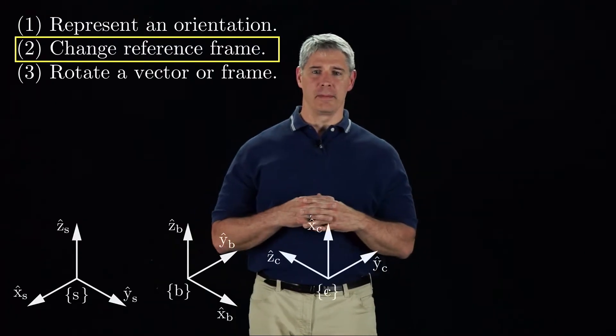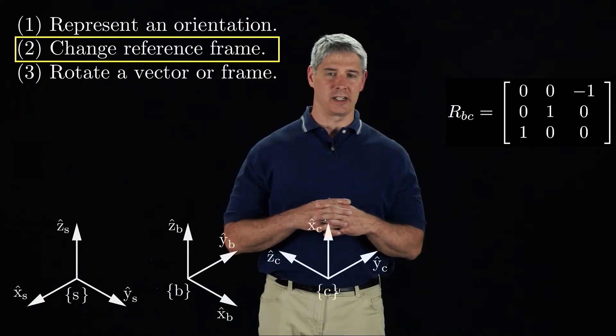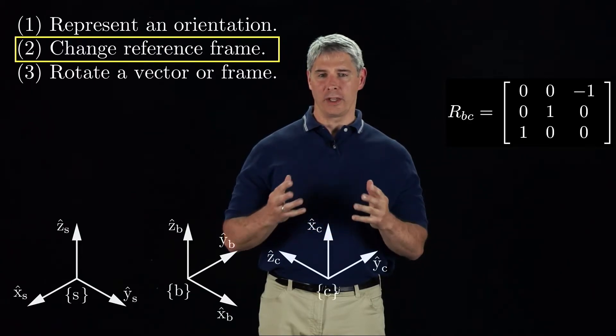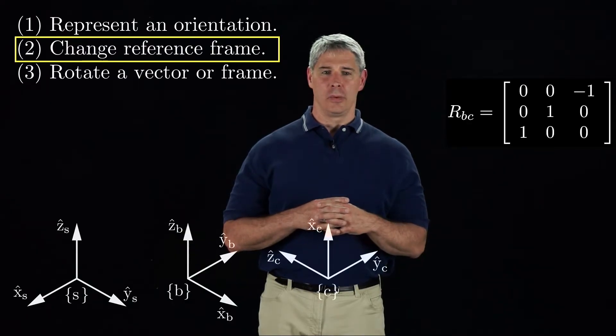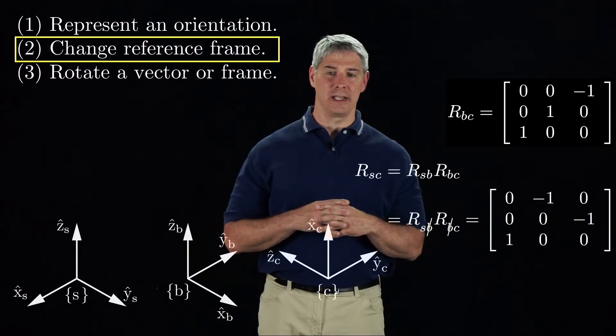To demonstrate a change of reference frame, consider the rotation matrix RBC, representing the orientation of frame C in frame B coordinates. If we want to express the C frame in S coordinates instead of B coordinates, we can perform the matrix multiplication RSC equals RSB times RBC.